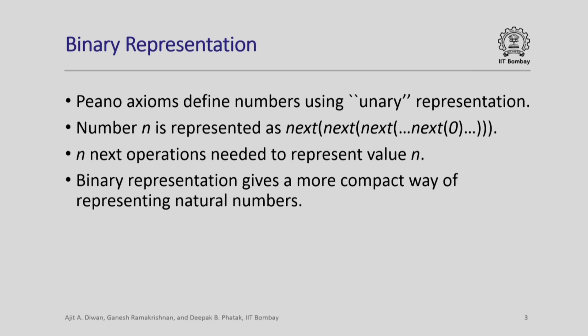We have seen one way of defining numbers using the Peano axioms. This can be thought of as a unary representation — to define the number n, we represent it as next of next of next of ... of 0, where we apply the next operation n times to get the value n starting from 0. Binary representation gives a more compact way of representing numbers; the same number can be obtained using much fewer operations than the n next operations needed.